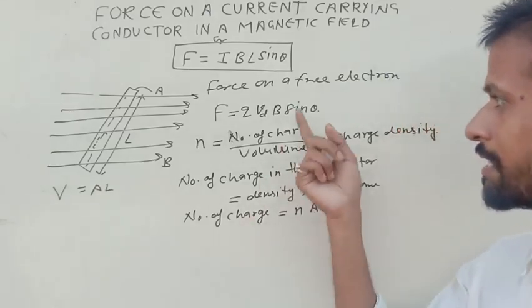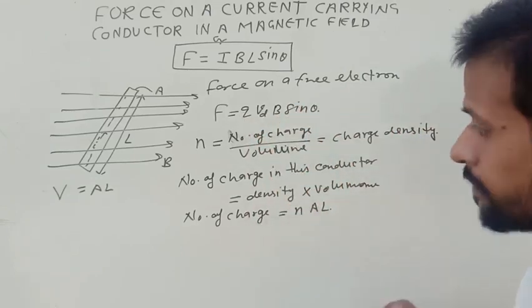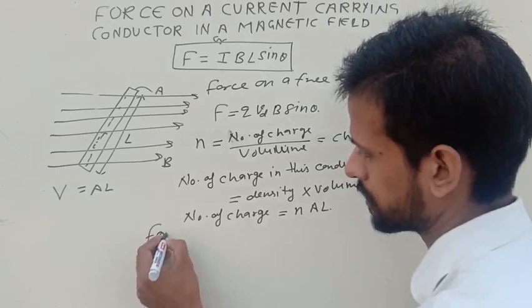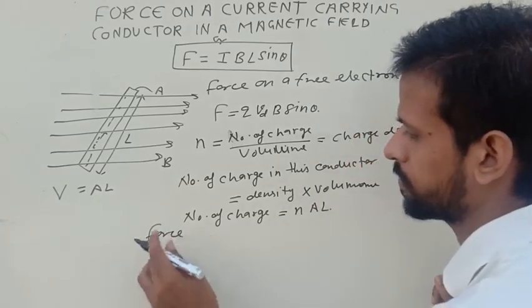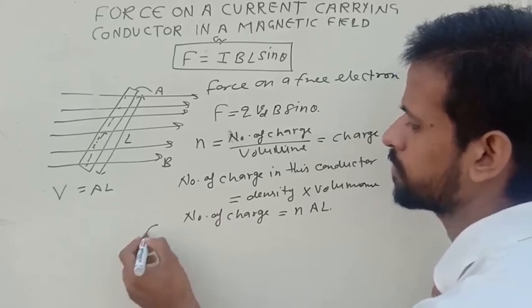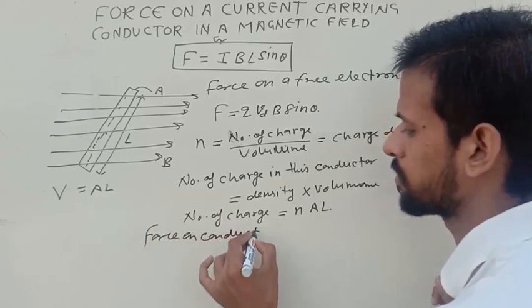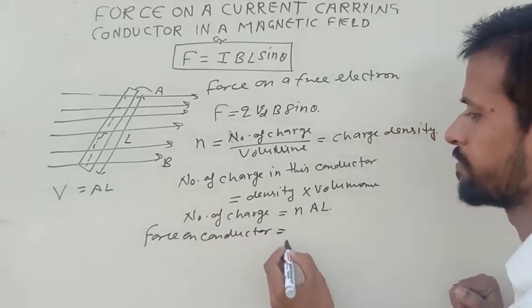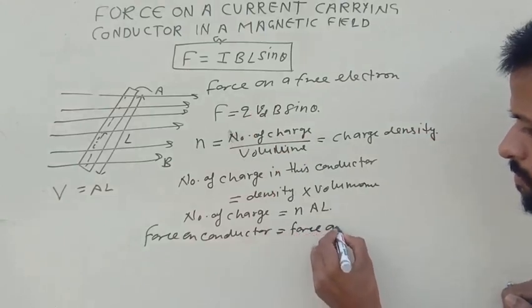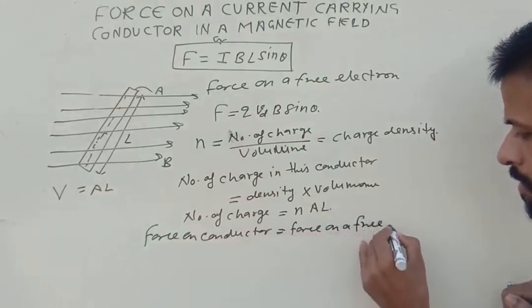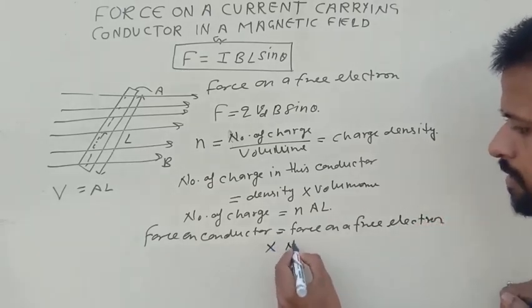If on a single charge force is this, then how much force for all these charges? So total force, or we can write force on conductor, is equal to force on a free electron times number of charge.